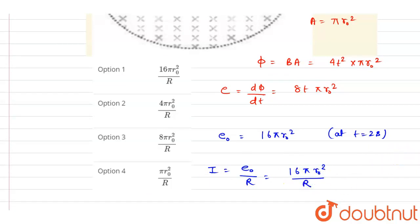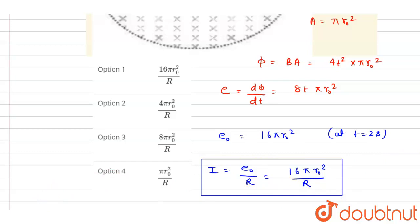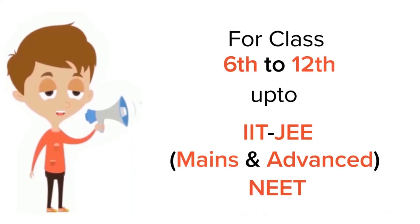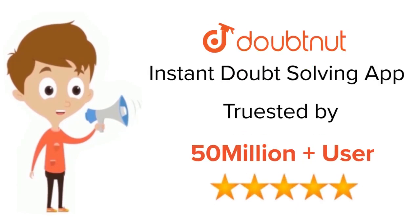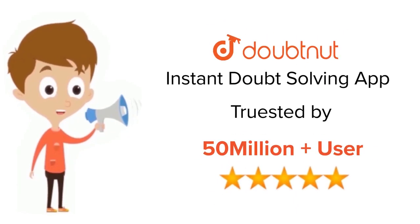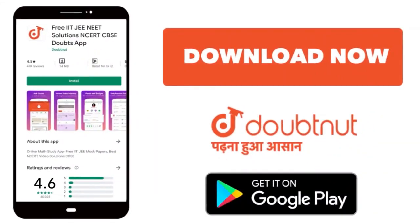This is the current and the answer to this question. Option A is correct. Thank you. For class 6 to 12th, IIT JEE, and NEET level, trusted by more than 5 crore students — download the DoubtNet app today.